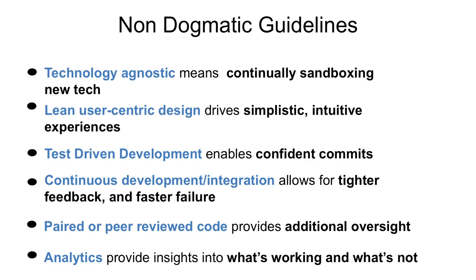We distilled those core competencies and principles down into what NBC could bring back home to the enterprise. We run a technology-agnostic shop — we're constantly sandboxing new technology. We base all of our design around the user. We do TDD — we write about as many tests as we do features to make sure our code quality is good. As you start to introduce new team members or members roll off, you empower developers to make changes confidently, as opposed to being fearful they're going to break something or bring an entire application down.